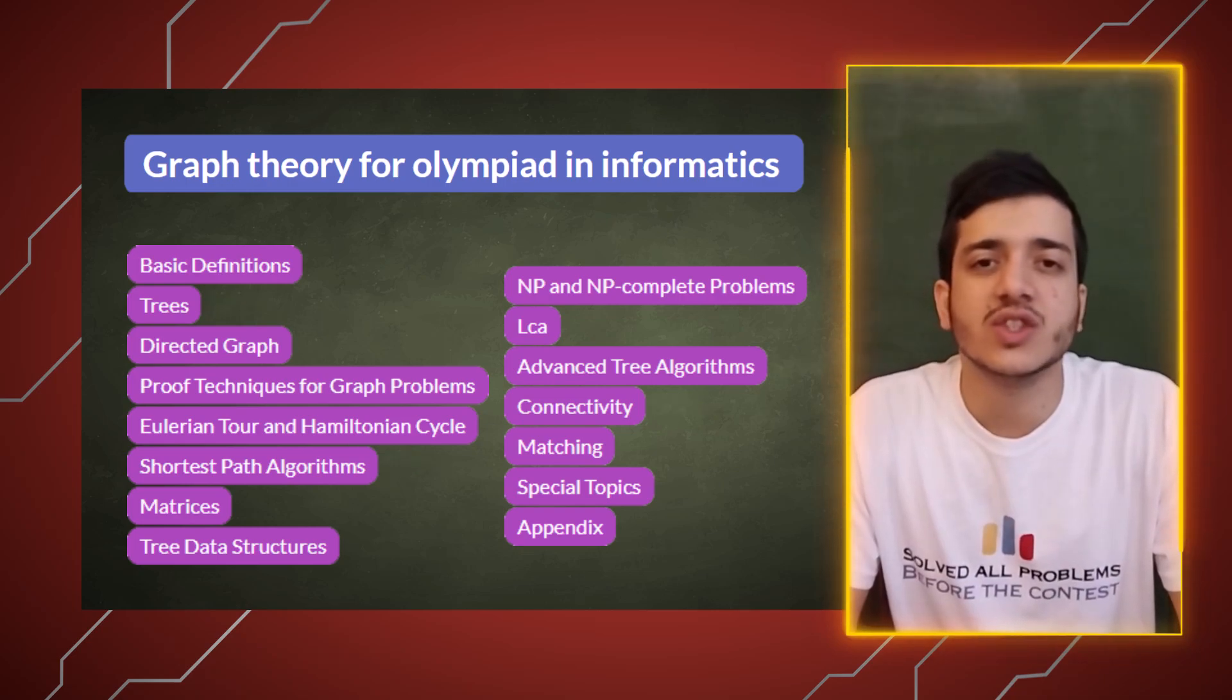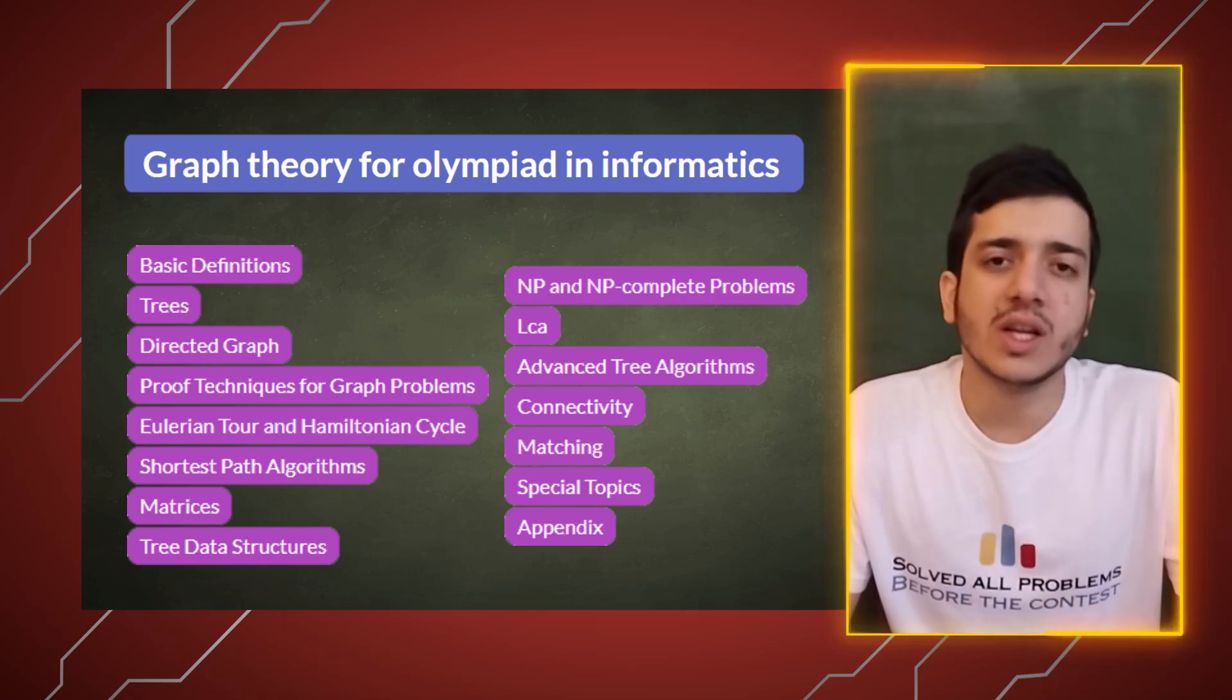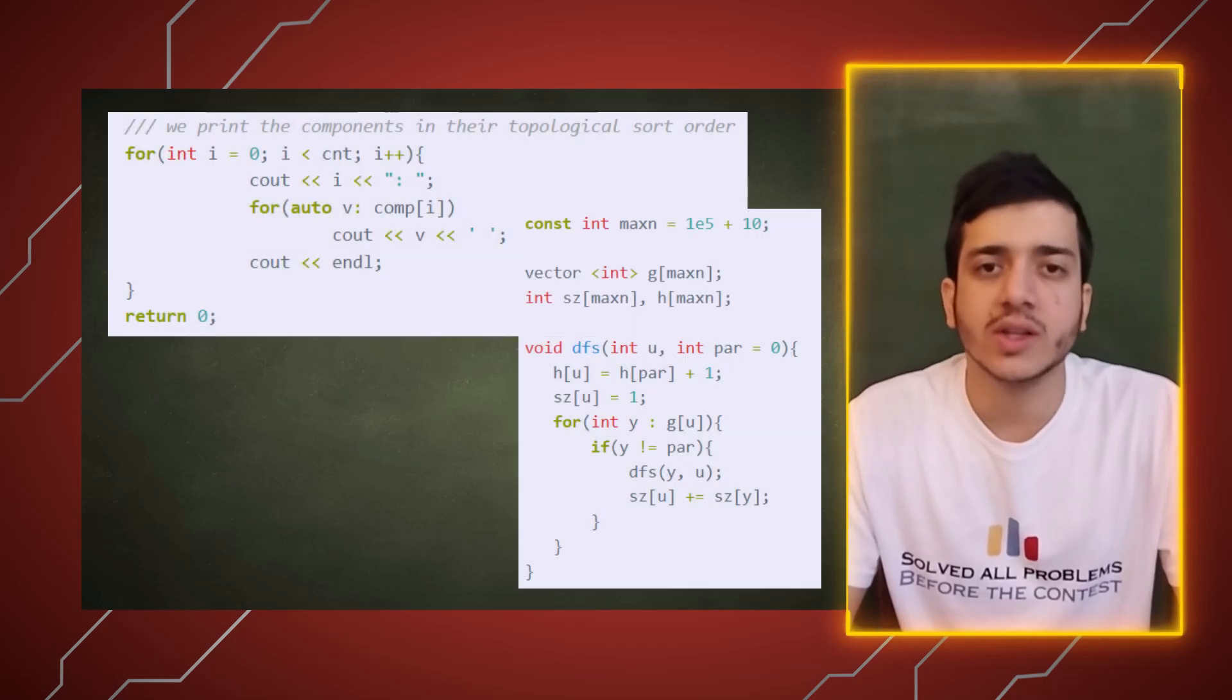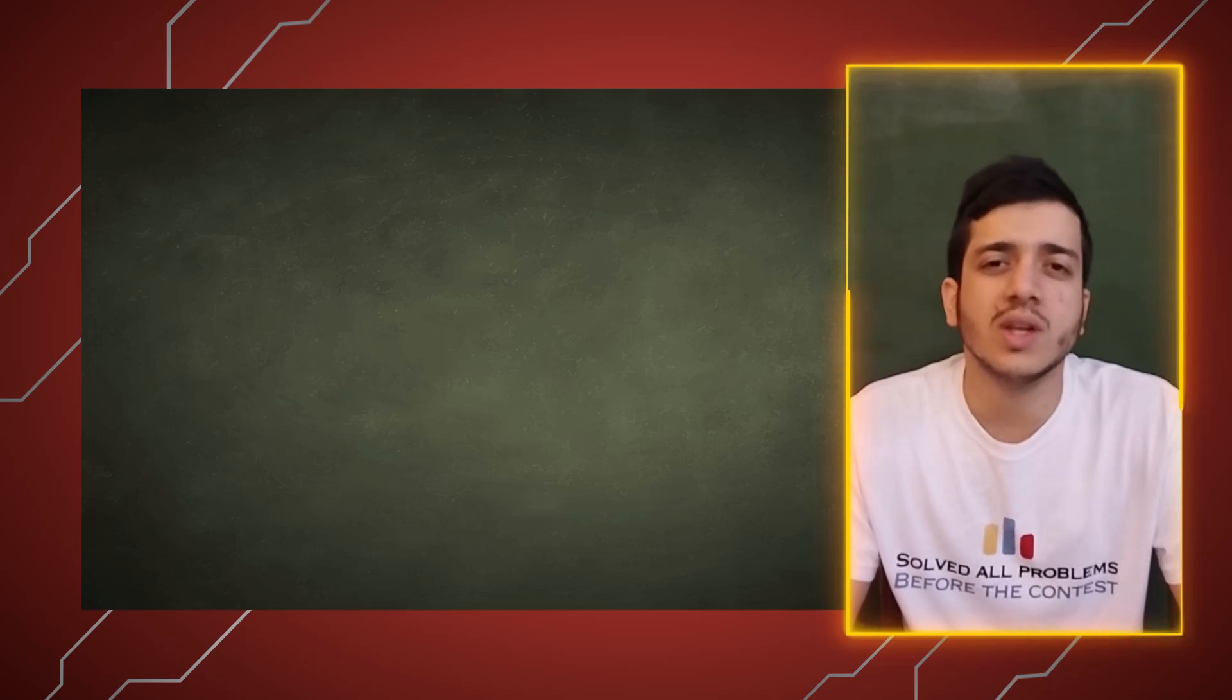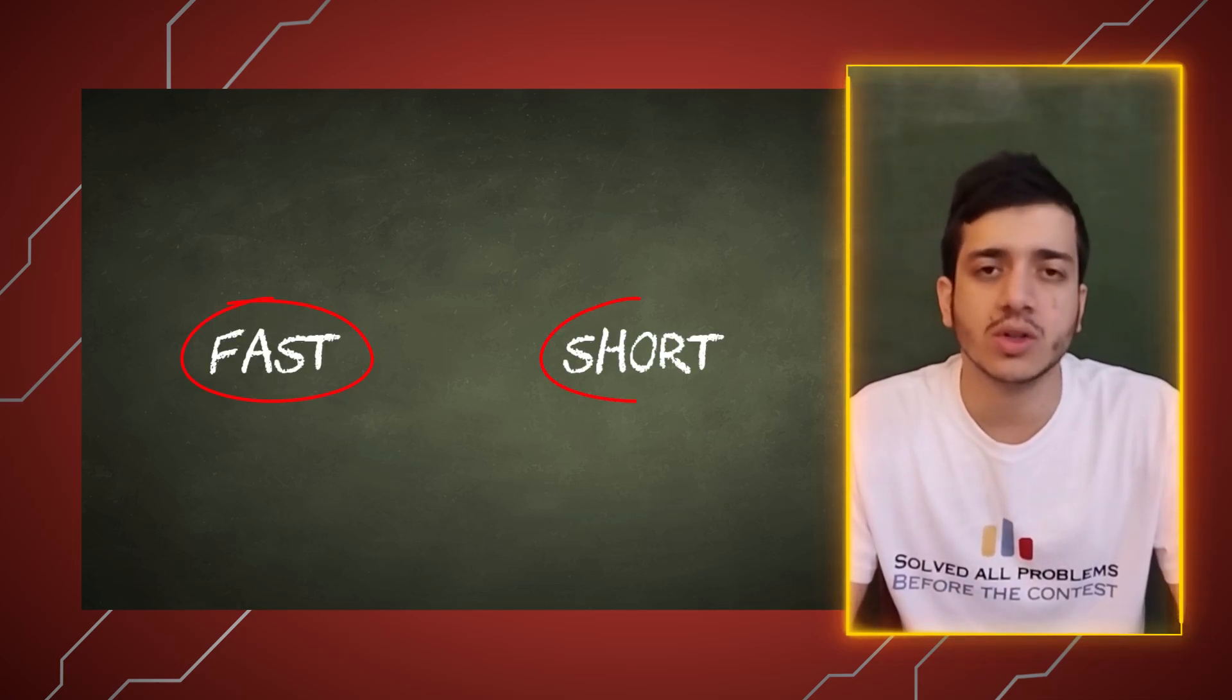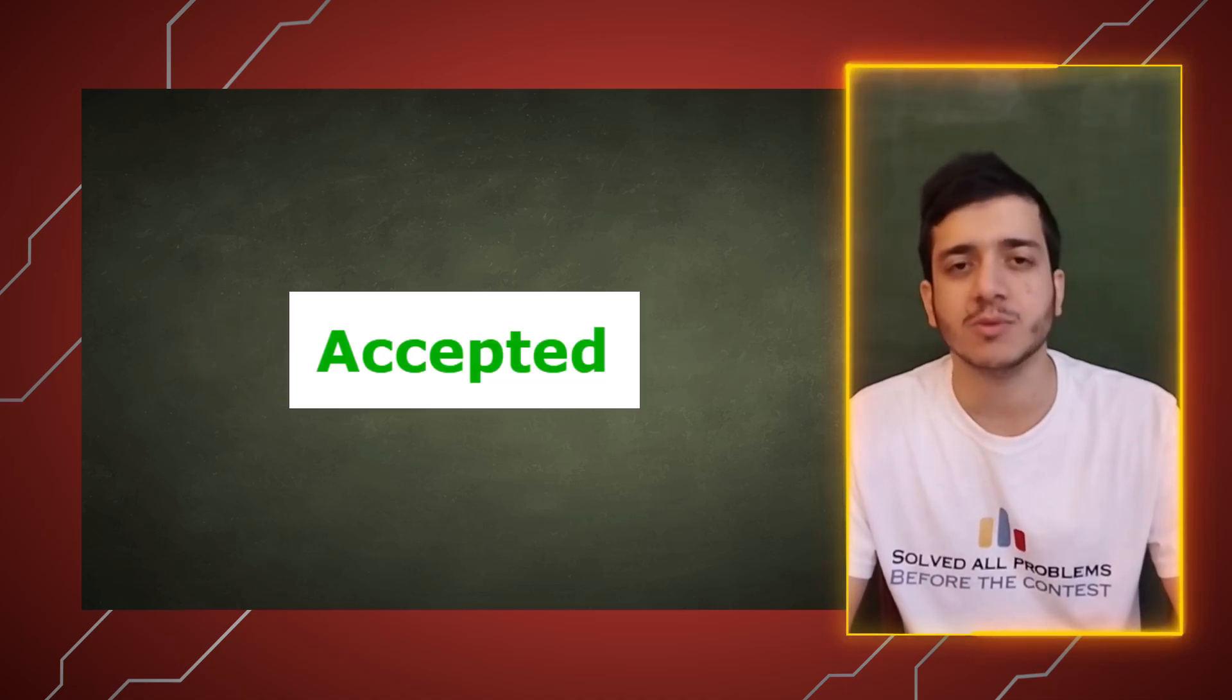And here is what's great for competitive programmers: the code. Every method and idea comes with fast, short, clean code that is ready to be used in a contest. No long codes like academic books, just fast, short, working code that will get you that green accepted verdict.